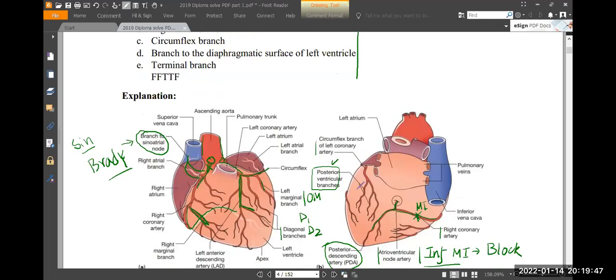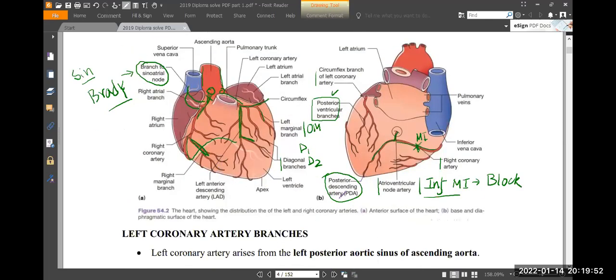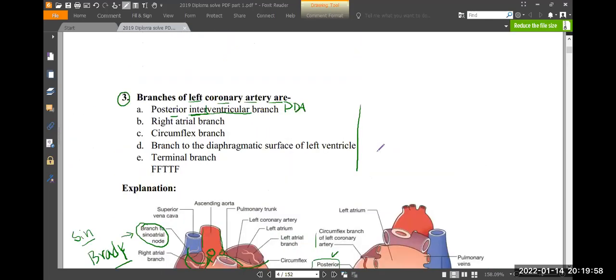Because there are some posterior ventricular branches. But if they say posterior interventricular branch, then that is a branch of RCA. So PDA means posterior interventricular branch—that is a branch of RCA. Right atrial branch obviously from RCA. Circumflex from left. The diaphragmatic surface branches are called posterior ventricular branches. Is it a terminal branch? It's a special terminal branch, so that's why it's false.